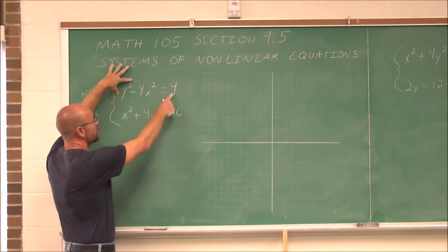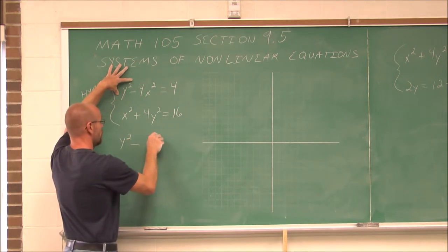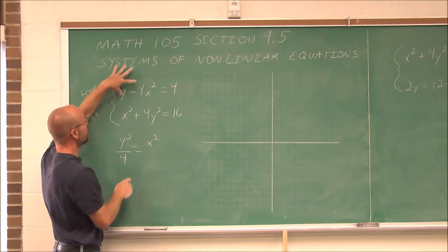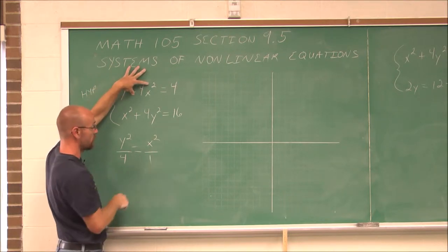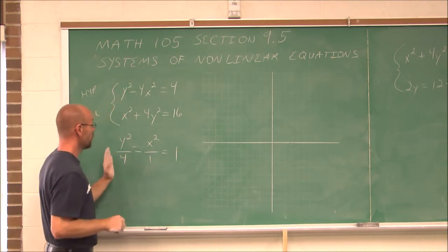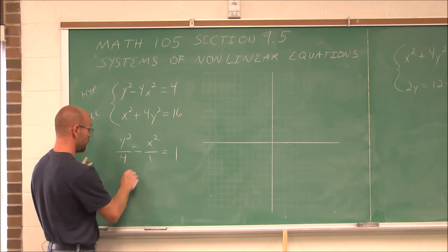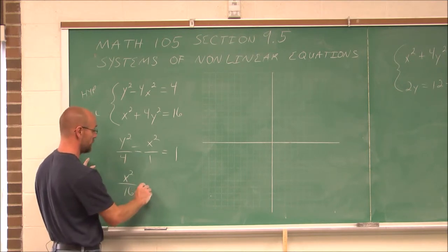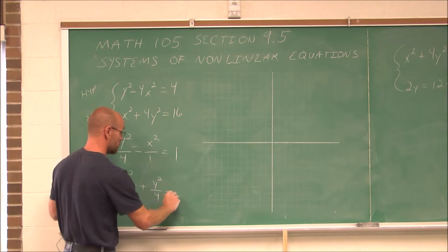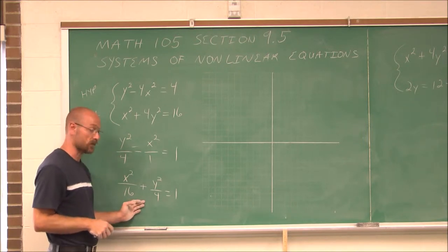To put a hyperbola in standard form, I set it equal to 1 by dividing all terms by 4. So y squared divided by 4 is y squared over 4, and 4x squared divided by 4 is x squared over 1, and 4 divided by 4 is 1. This is my hyperbola. For the ellipse, I divide everything by 16 to get x squared over 16 plus y squared over 4 equals 1. Now we're ready to graph using the tools we learned in the previous section.